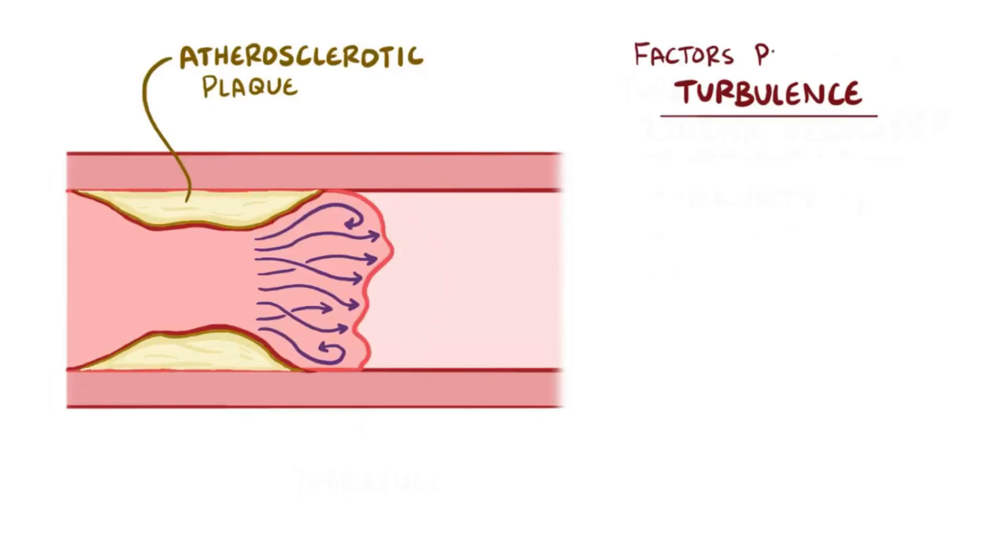Now, there are a number of factors that help predict turbulence, and they include the density of the blood, usually written by the Greek letter rho, as well as the viscosity of the blood, denoted by the Greek letter eta. You can think of a fluid's viscosity as kind of like its thickness, like for example the viscosity of honey is a lot greater than that of water.